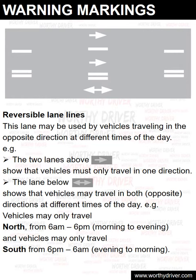Reversible lane lines. This marking shows a lane may be used by vehicles traveling in the opposite direction at different times of the day. For example, the two lanes above show that vehicles must only travel in one direction. The lane below shows that vehicles may travel in both opposite directions at different times of the day.